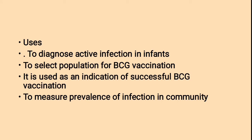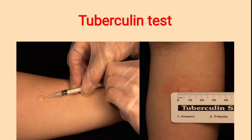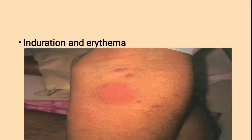Uses of the tuberculin test: to diagnose active infection in infants; to select population for BCG vaccination; as an indication of successful BCG vaccination; and to measure the prevalence of infection in the community. This is the picture of the tuberculin test showing how the protein derivative is injected on the skin and the resulting erythema and induration.